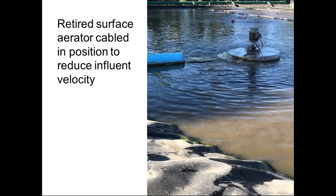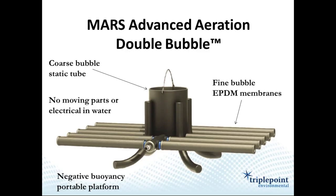In Idaho, a 2 MGD flow lagoon was completely redone with a large air header in the background and floating laterals providing subsurface diffused aeration. However, when lift station pumps kick on, a significant current backs up and causes flow disruption. They cabled off an old surface aerator to break that up, while continuing to evaluate a manifold system to evenly load the pond.